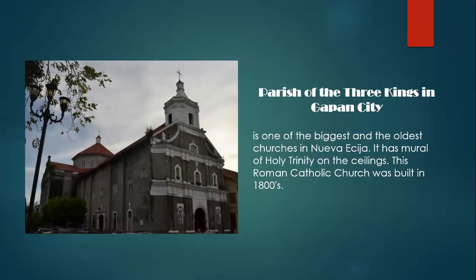The next one is the Parish of the Three Kings in Gapan City. It is one of the biggest and oldest churches in Nueva Ecija. This Roman Catholic church was built in the 1800s. It has huge side doorways with two standing images of their patron saints on both sides and a mural of the Holy Trinity on the ceilings. With the style of Byzantine architecture, the church is made of bricks, adobe, and lime.